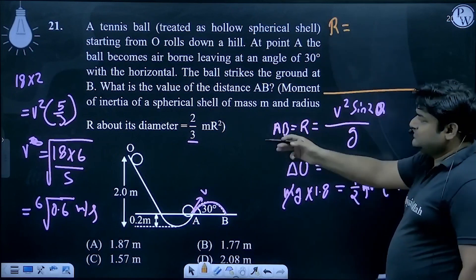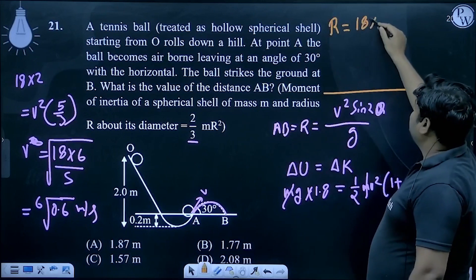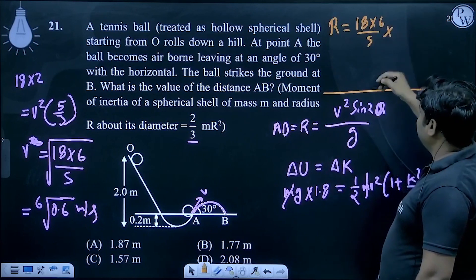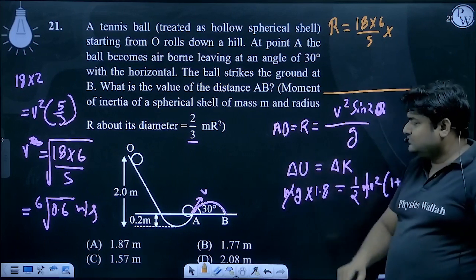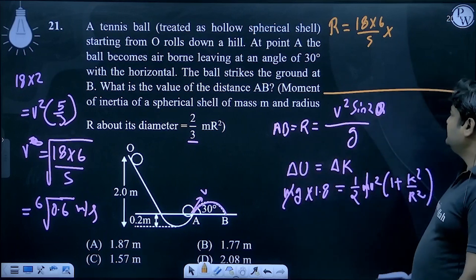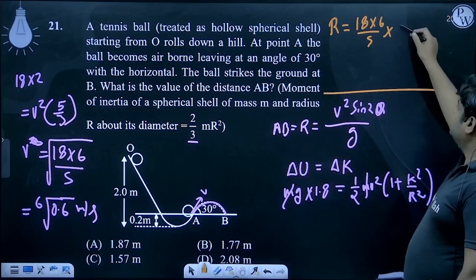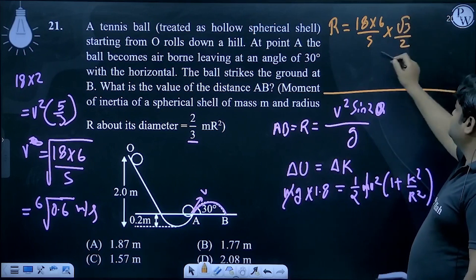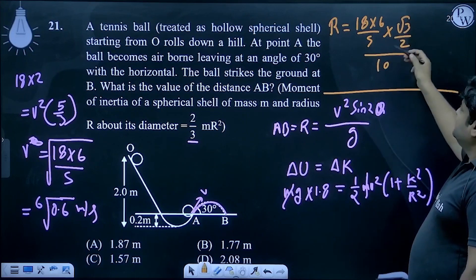Range equals v² sin(2θ)/g, so 18 × 6/5 × sin(60°) / 10 = 18 × 6/5 × √3/2 / 10.